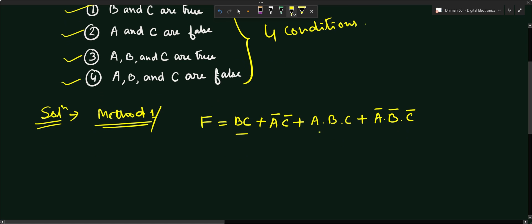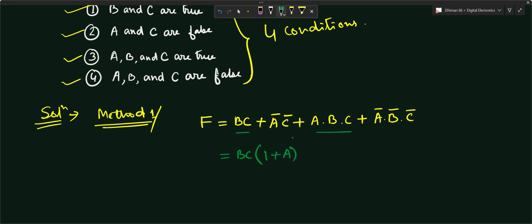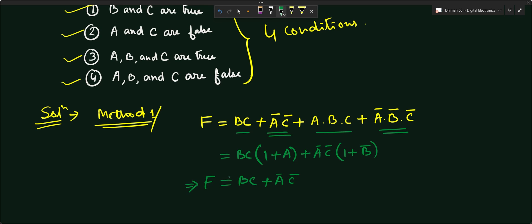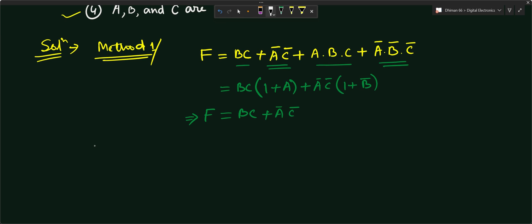Now we simplify. Taking BC common from the first and third terms gives BC(1 + A). Taking A-bar·C-bar common from the second and fourth terms gives A̅C̅(1 + B̅). Since (1 + A) = 1 and (1 + B̅) = 1, the simplified output expression is F = BC + A̅C̅. This is the solution using Method One.